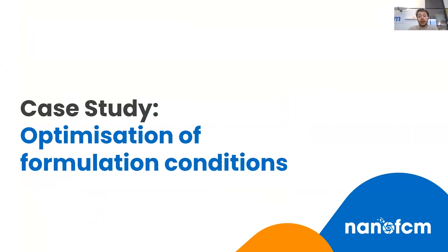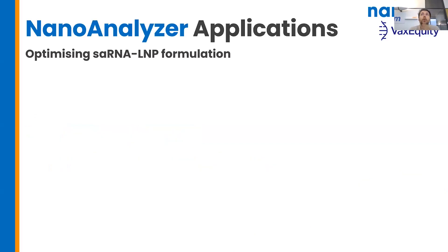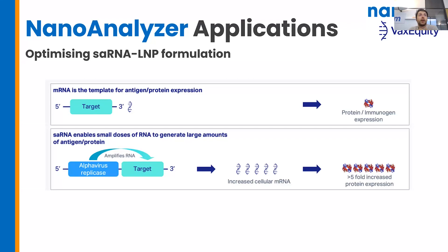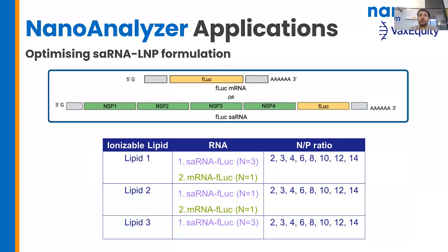I'd like to jump straight into talking about the novel ways we've been able to produce nanoflow cytometry data in collaboration with VaxEquity. VaxEquity works with self-amplifying RNA — a really cool RNA species. Upon delivery to the cell, it amplifies, giving a larger cohort of mRNA inside the cell, allowing for increased protein expression. This does come at the cost of working with a slightly larger nucleic acid — it's longer in nucleotide length than standard mRNA.